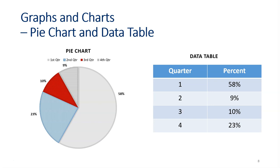Here's another one for pie charts and data tables. In this example, I have a pie chart that represents first, second, third, and fourth quarter. We have all of our labels and each of the pie slices has a different pattern. Additionally, we have a data table with all of our data presented in an easy to consume method.